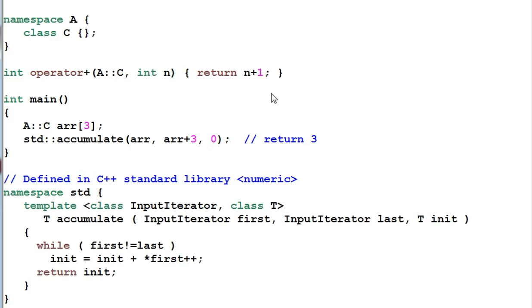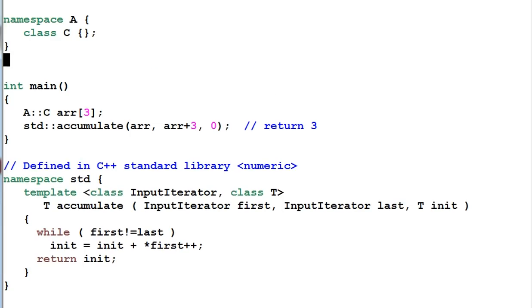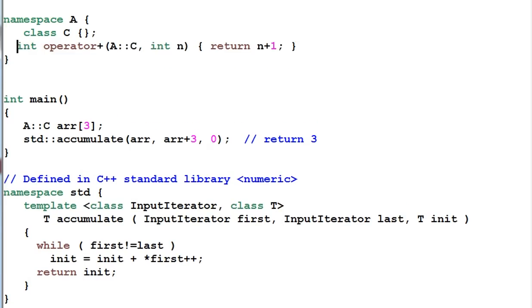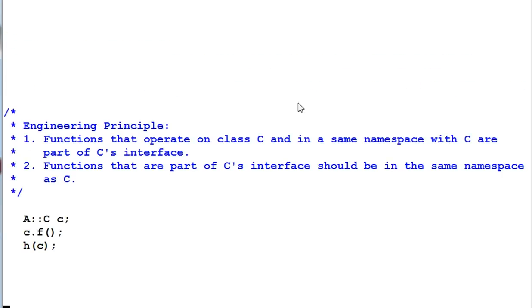And the solution is follow the principle and put that operator plus in the same namespace as C. Now the compiler will be able to see our operator plus because of Koenig lookup. This is why we should remember the principle and apply them during our daily coding.